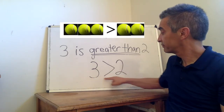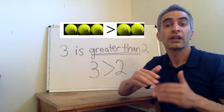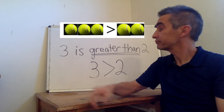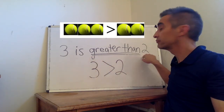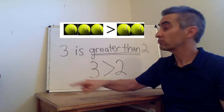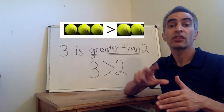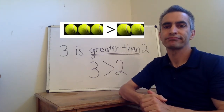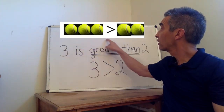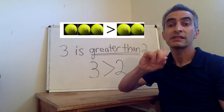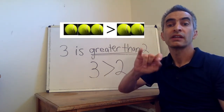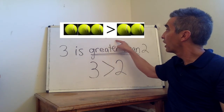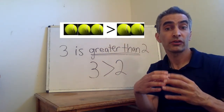This is a math sentence. It means three is greater than two. This is an English sentence — it also means three is greater than two. Both of these sentences mean the same thing. On the top here, we've got an inequality problem, and we're using pictures to demonstrate it. Three balls here are greater than two balls.